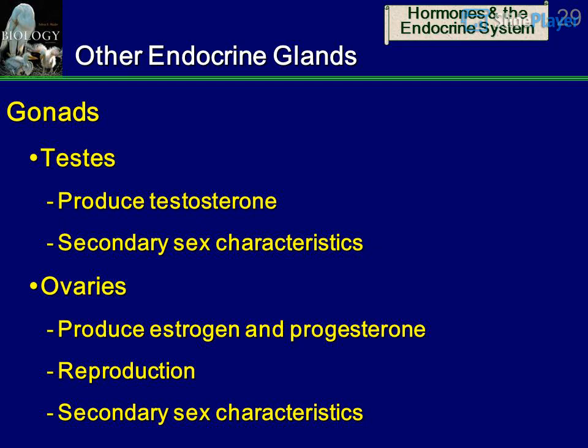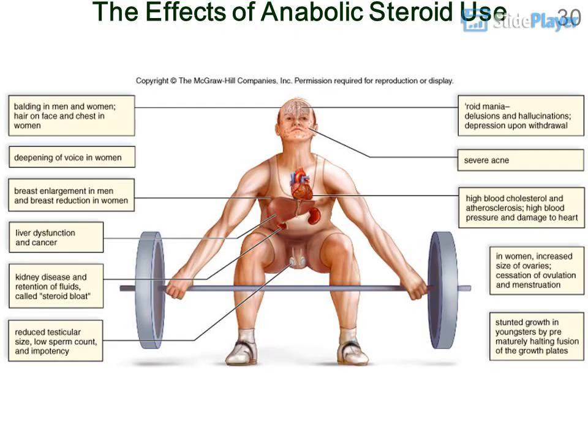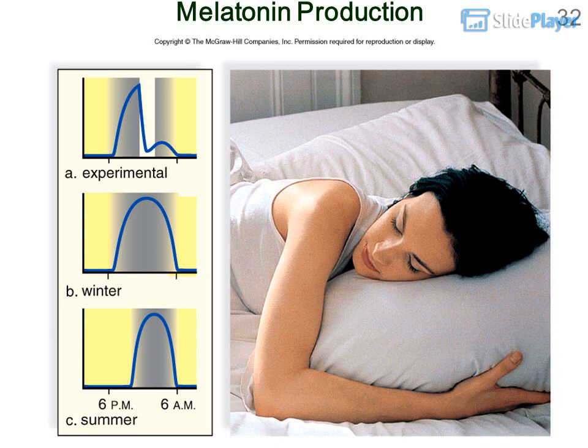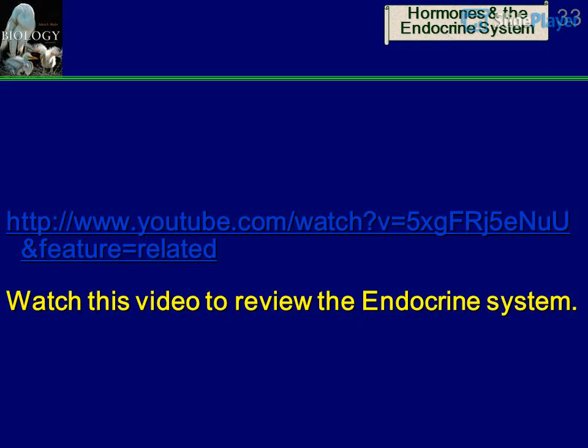Other Endocrine Glands: Gonads — testes produce Testosterone (secondary sex characteristics); ovaries produce Estrogen and Progesterone (reproduction). Also discussed: the effects of anabolic steroid use. Pineal Gland produces Melatonin, involved in circadian rhythms. Thymus Gland secretes Thymosins, which aid in differentiation of lymphocytes. Prostaglandins are produced within cells and are not distributed in the blood.